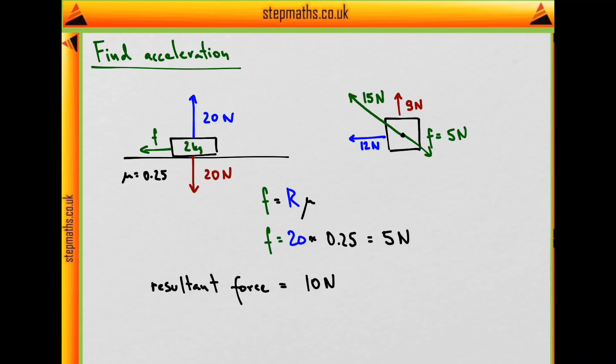And that makes the resultant force in this direction acting on our block 10 Newtons, 15 minus 5. And by Newton's second law, the acceleration must be the resultant force divided by mass, 10 Newtons divided by 2 kilograms,